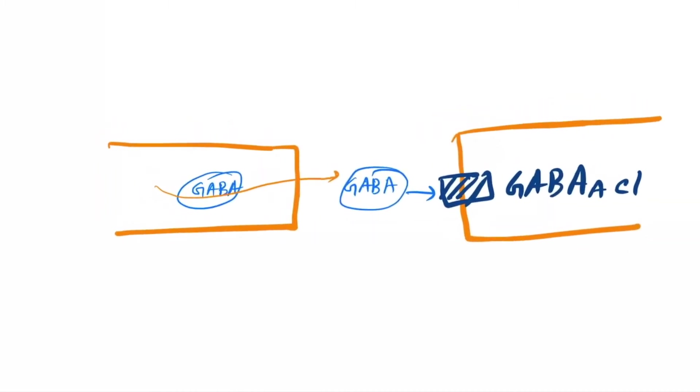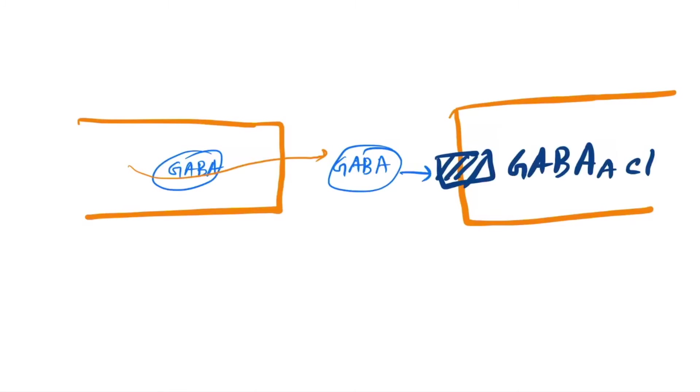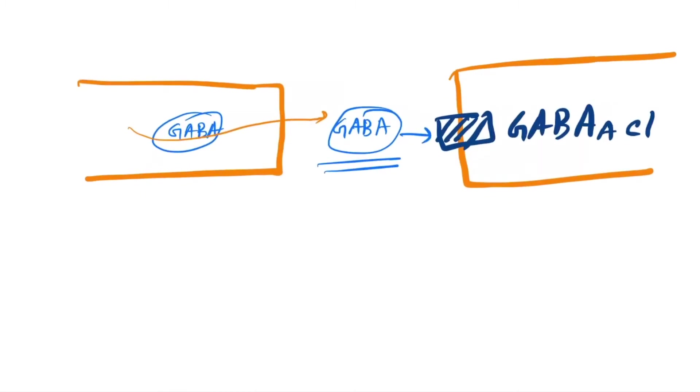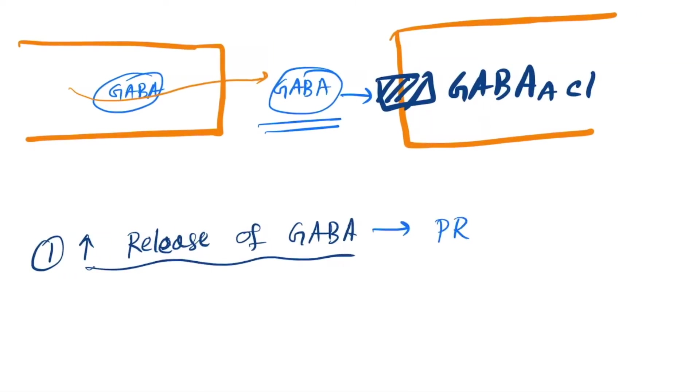And here we can - there are four types of drugs. So first the release of GABA, we can increase the release of GABA. First category is increase release of GABA. The drugs are two drugs: pregabalin and gabapentin.